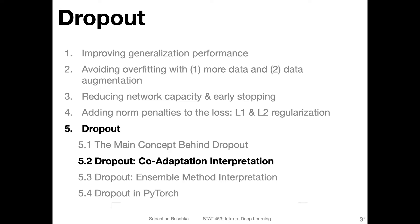Let's try to understand why dropout might work well in practice — why would it help in terms of generalizing better to new data, for instance the test data. One interpretation is the co-adaptation theory, which we will talk about briefly. In the next video, I will talk about the ensemble method interpretation.